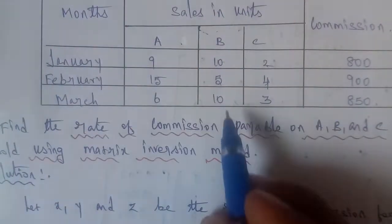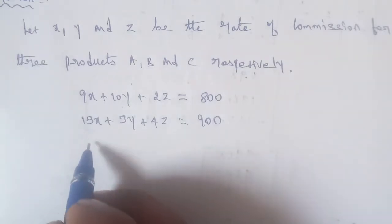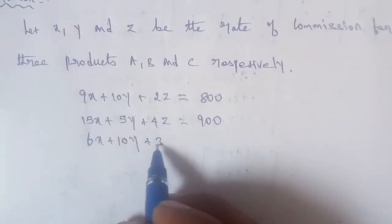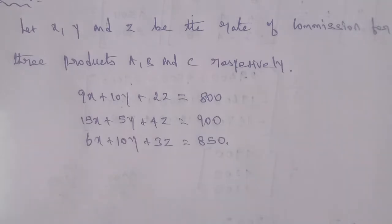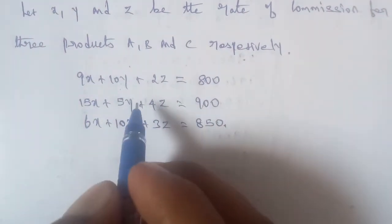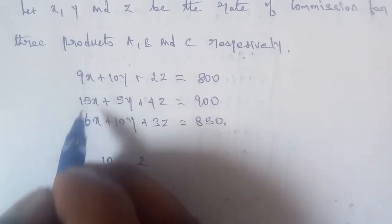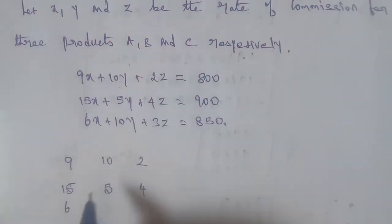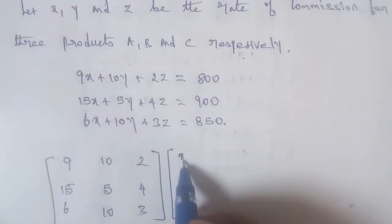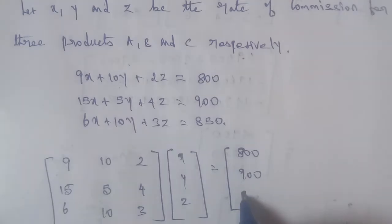The third equation is 6x plus 10y plus 3z equal to 815. So the given system can be written in matrix form as: the coefficient matrix with first row [9, 10, 2], second row [15, 5, 4], third row [6, 10, 3], multiplied by [x, y, z] equals [800, 900, 815].